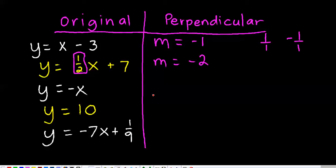This third one, y equals negative x. The original slope is, actually it's an invisible negative 1 right here. So the opposite reciprocal of that one is positive 1.